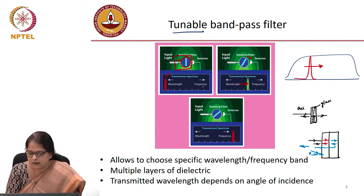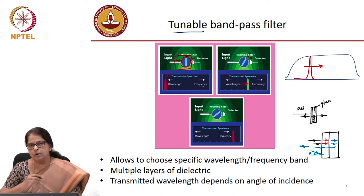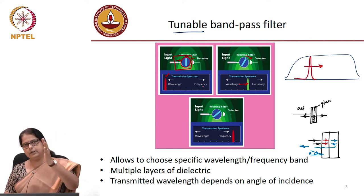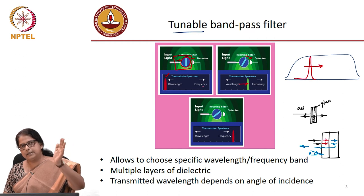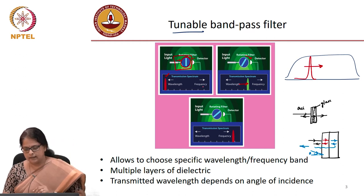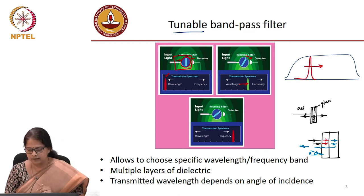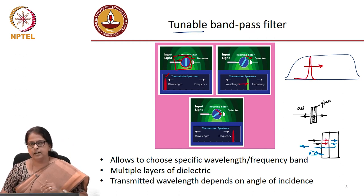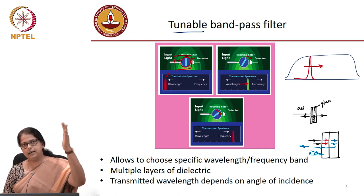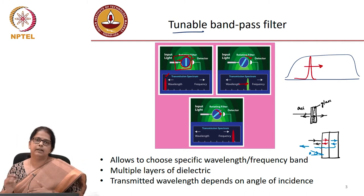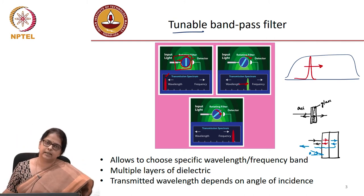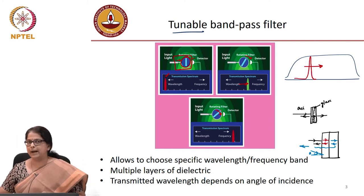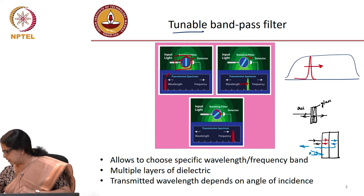Depending on the angle of rotation, the selected wavelength keeps changing. Rotating further changes the wavelength that is selected. This is how a bandpass filter works.